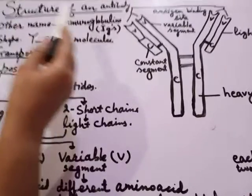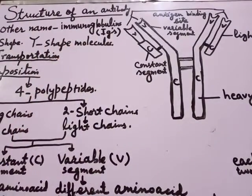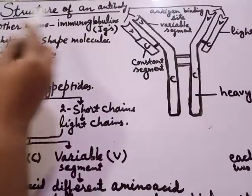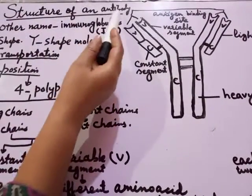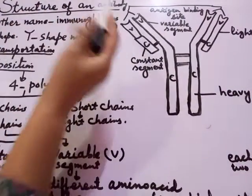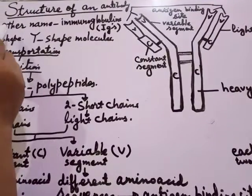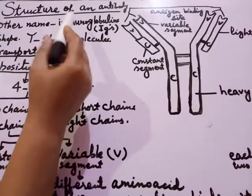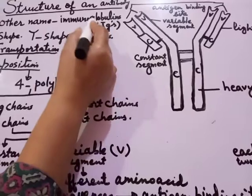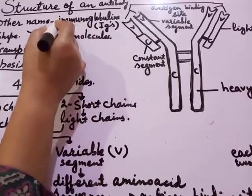Assalamu alaikum. Now we will discuss the structure of an antibody molecule. Antibodies are produced by B cells during the third line of defense. Another name for an antibody molecule is immunoglobulin. These are proteins that cause immunity, which is why we call them immunoglobulins.